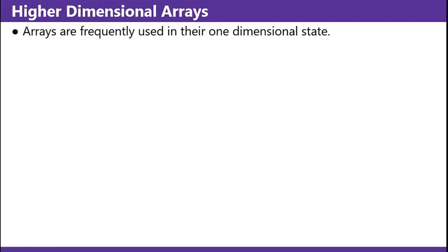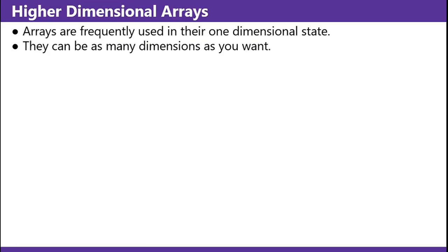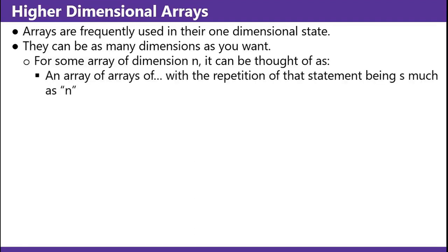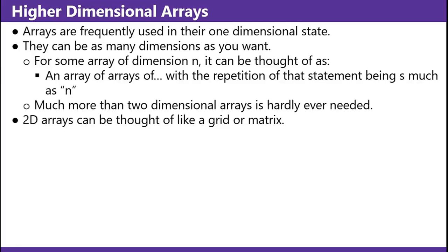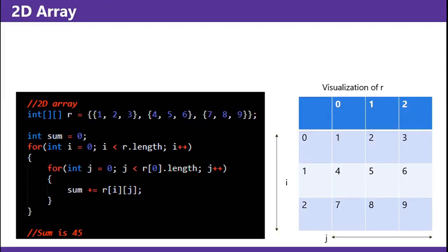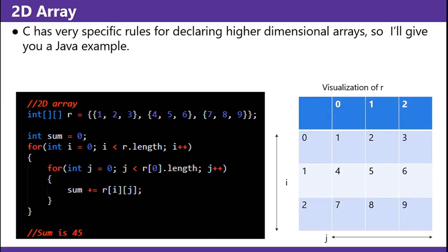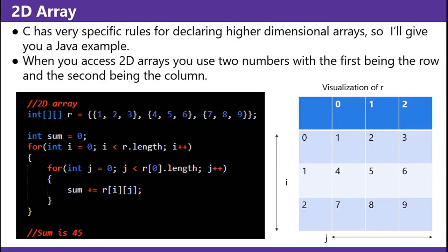Higher dimensional arrays: arrays are frequently used in their one dimensional state, but they can be as many dimensions as you want. For some array of dimension n, it can be thought of as an array of arrays of arrays — with the repetition of that as much as n. Much more than two dimensional arrays is hardly ever needed. 2D arrays can be thought of like a grid or matrix. When you access 2D arrays you use two numbers with the first being the row and the second being the column. So when you're going through the double loops, you're accessing row 0 of i and then columns 0, 1, 2 of j — eventually adding up the numbers 1 through 9 to get 45.